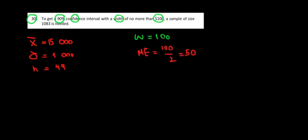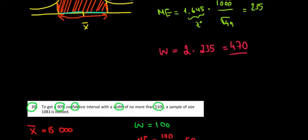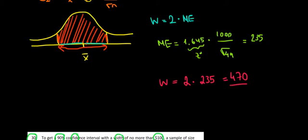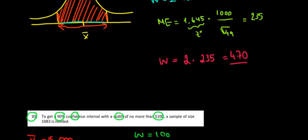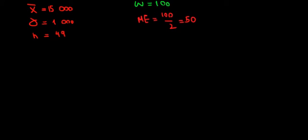Now what is the margin of error? Recall that we found this in the previous video. Let's refresh our memory. The margin of error is equal to the critical value times the standard deviation divided by the square root of the number of observations. So the margin of error equals the critical value Z times the standard deviation divided by the square root of N.